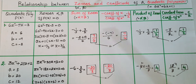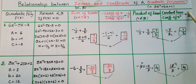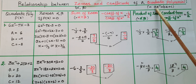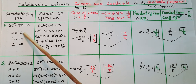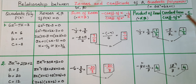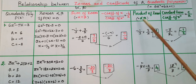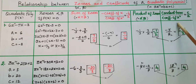Similarly, the product of zeros: alpha × beta = (-1/3) × (3/2) = -1/2. The constant term divided by the coefficient of x² is c/a = -3/6 = -1/2. These two are equal, therefore product of zeros equals constant term by coefficient of x², that is c/a.